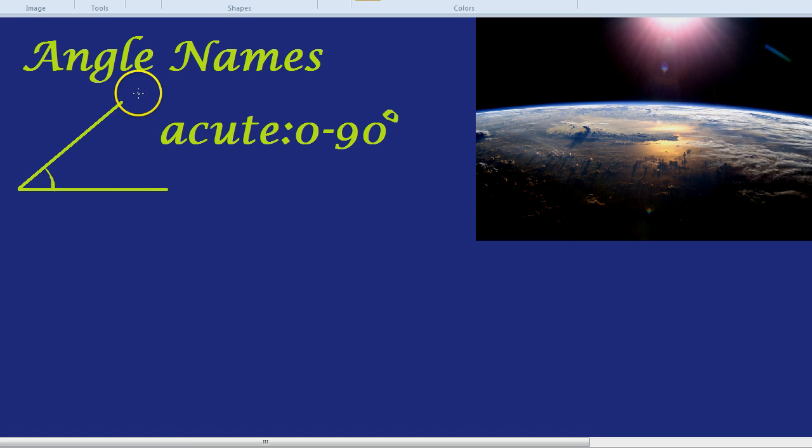And this angle, if you look at it, looks quite sharp. If you imagine that as like an arrow or the tip of a spearhead, it would be quite a sharp weapon. So that's why that narrow angle is called an acute angle between 0 and 90 degrees.